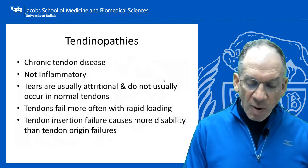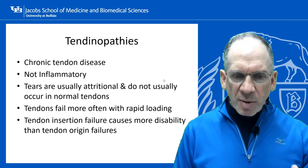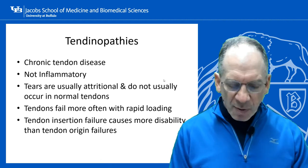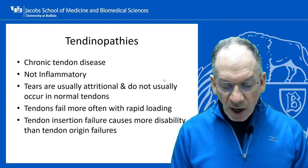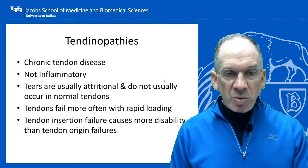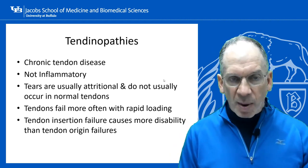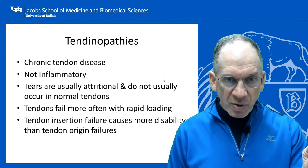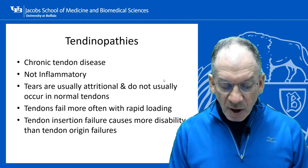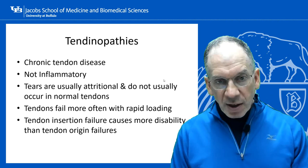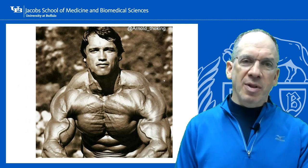In summary, tendinopathies and enthesopathies are chronic tendon disease — usually not inflammatory. If you do a biopsy you'll just see chronic tendon degeneration without inflammatory cells. Tendon tears are usually attritional; normal tendons in young athletes rarely tear. You more commonly see ruptures in 30-50 year old athletes because the internal tendon structure is histologically abnormal, making it easier to fail. Tendons fail more often with rapid loading — the rubber band analogy again. Tendon insertion failures cause significantly more disability than origin failures because once the insertion is ruptured, the tendon is no longer acting on the joint.